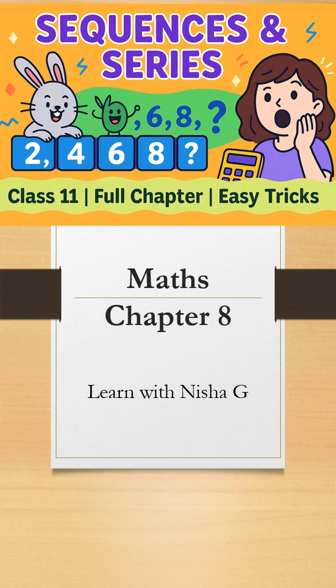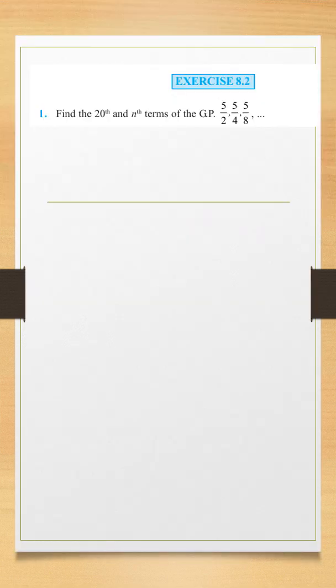We are studying class 11 mathematics chapter 8 sequences and series. Here comes exercise 8.2 question number 1. It says find the 20th and nth terms of this GP: 5 by 2, 5 by 4, 5 by 8 and so on.